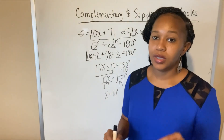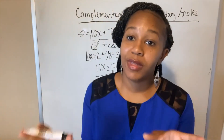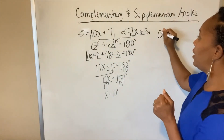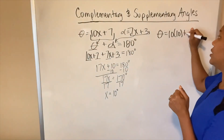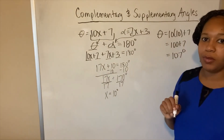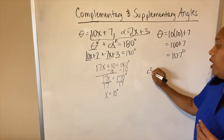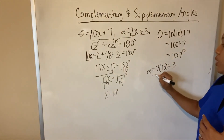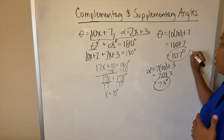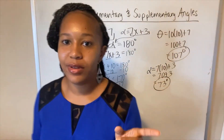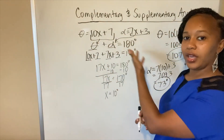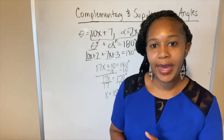Now that we know x equals 10, we plug it back into each expression to find the actual angle measures. Theta equals 10(10) + 7 = 100 + 7 = 107 degrees. Alpha equals 7(10) + 3 = 70 + 3 = 73 degrees. So the two supplementary angles are 107 degrees and 73 degrees. That's how you solve this type of problem — take the two angle expressions, add them together, set them equal to 180, and solve.